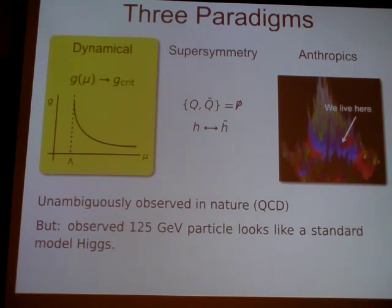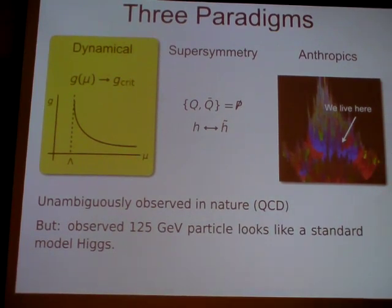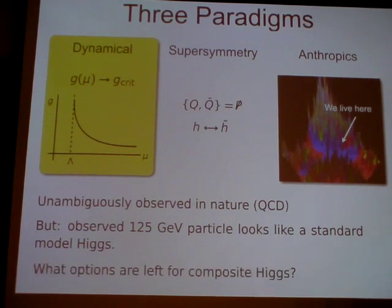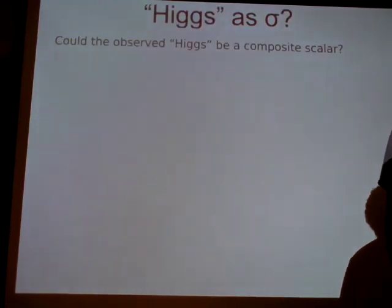However, if we're trying to use this to say something about the Higgs, we have to face the fact that the 125 GeV particle that was discovered at the LHC looks a lot like a standard model Higgs. So in this talk, I want to talk about what options may be left for a composite Higgs.